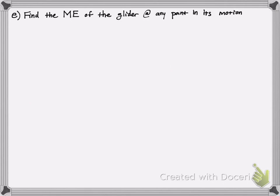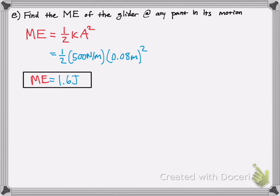Okay, last part. Find the mechanical energy of the glider at any point during its motion. Well, mechanical energy is simply 1 half k A squared. So all you've got to do is plug in what you know, and that's the total mechanical energy throughout the process of this motion here. So that's pretty cool.